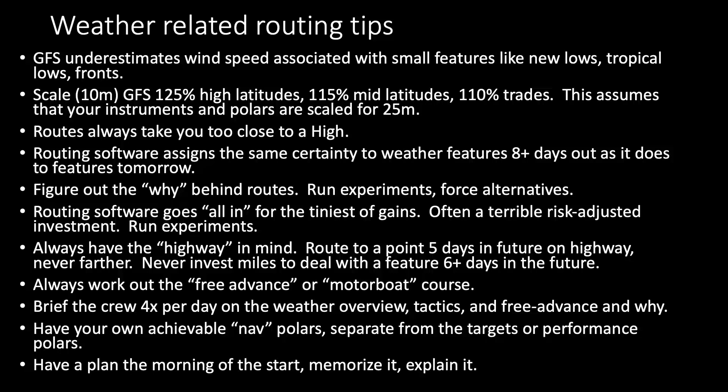Weather-related routing tips: the GFS underestimates wind speed associated with small features like new lows, tropical lows, and fronts, and dramatically underestimates their speed — if you try to fix that, the whole model becomes unstable, so it's a known characteristic. If you see a tropical on the GFS showing 35 knots, it means you're going to die. The best use of the text forecast is: see a tropical on GFS, go to the National Hurricane Center text forecast to get the actual parameters of high winds.